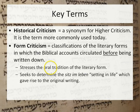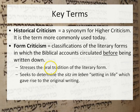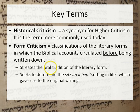Form criticism is the classification of the literary forms in which the biblical accounts circulated before being written down. Where source criticism looks for documents used in the composition of a text, form criticism says most material in the ancient world was transmitted orally — histories and genealogies were memorized and passed down from generation to generation. It tends to stress the Sitz im Leben, that's the German phrase for 'setting in life' or the life context out of which a given material arose.